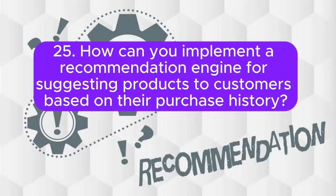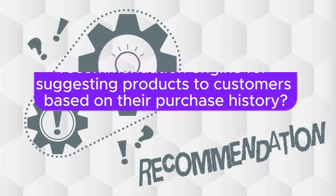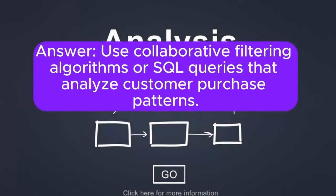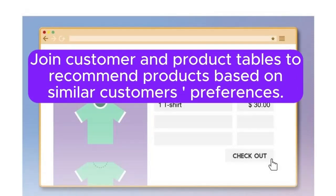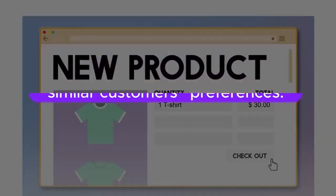Question 25: How can you implement a recommendation engine for suggesting products to customers based on their purchase history? Use collaborative filtering algorithms or SQL queries that analyze customer purchase patterns. Join customer and product tables to recommend products based on similar customers' preferences.